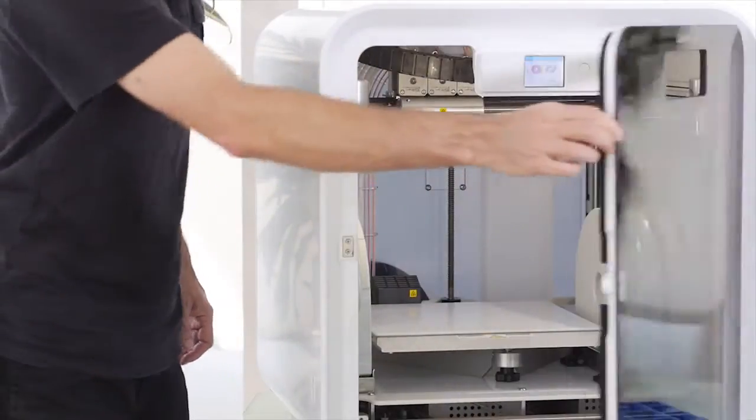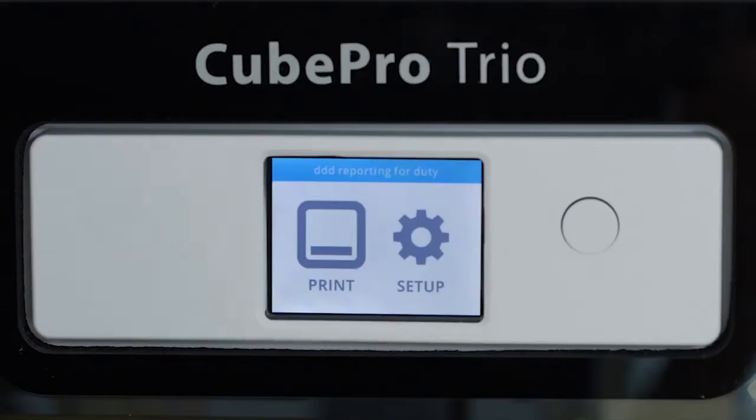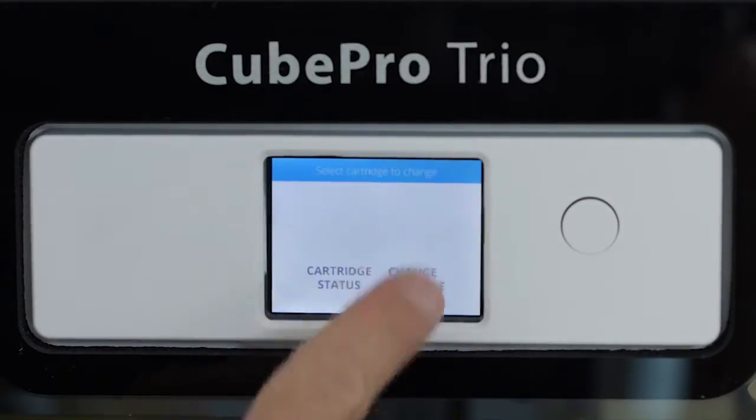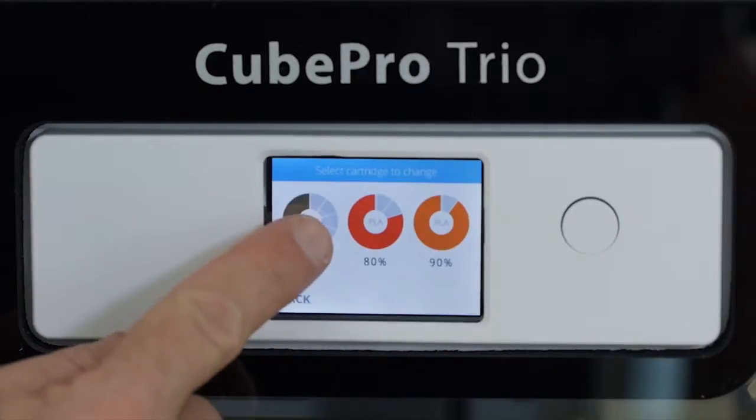We'll get started by replacing a cartridge to Bay 1. To install a cartridge, simply go to your setup menu and press Replace on the touch screen and select which cartridge you want to replace.